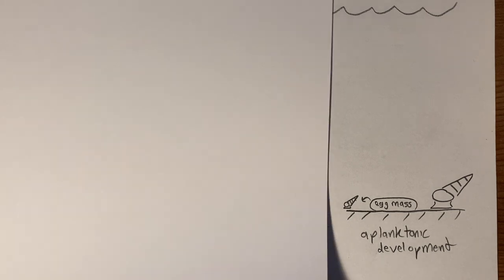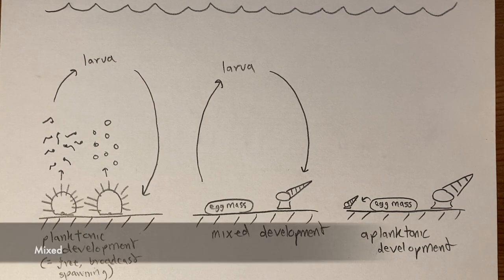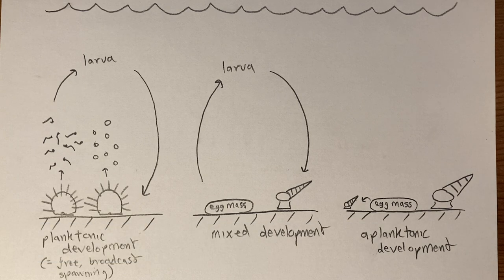And many invertebrates have an intermediate life history where fertilization and early development happen on the seafloor in a mass, a capsule, or the parent, but then a larva exits and spends some amount of time in the plankton. We can call those mixed life histories.